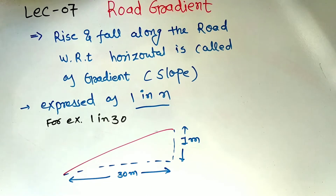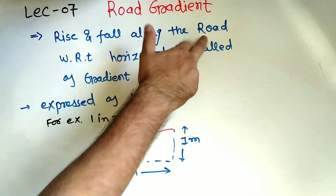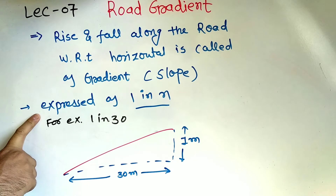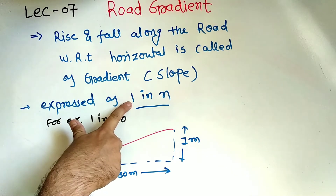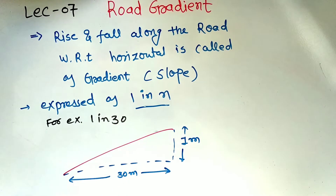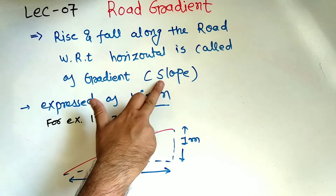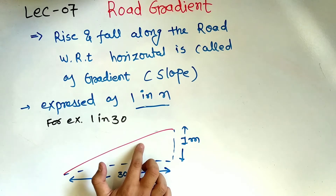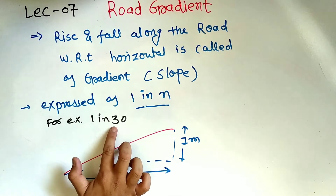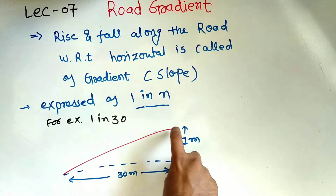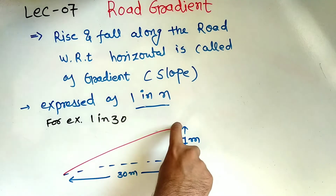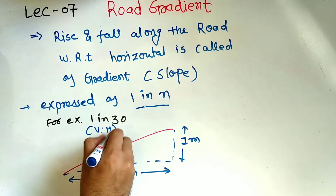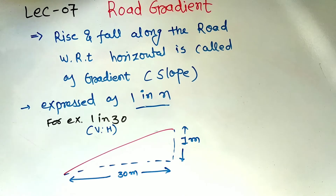The road gradient may be defined as the rise and fall along the road with respect to the horizontal — it is called a gradient. It can be expressed mathematically in terms of 1 in n. Imagine that this is your slope. For example, 1 in 30 means 1 meter vertical and 30 meter horizontal. This is the basic definition of the road gradient.